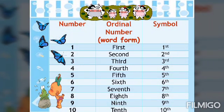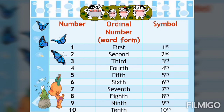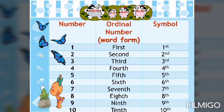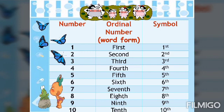In this slide, we have three columns. The first column shows the numbers from one to ten. In the middle column, we have the word form of the ordinal number. The last column on the right side shows the symbol of the ordinal number. We will now be learning the two ways of writing ordinal numbers.